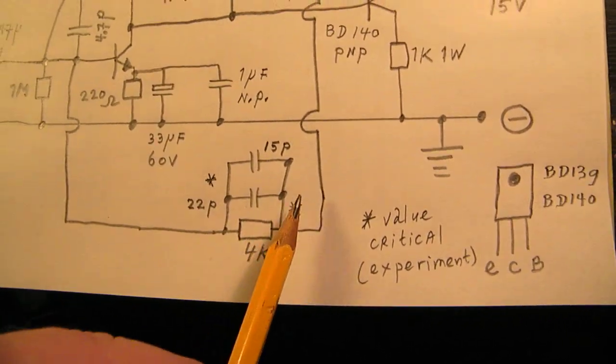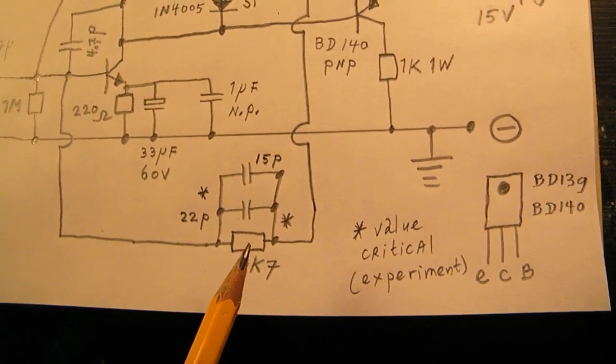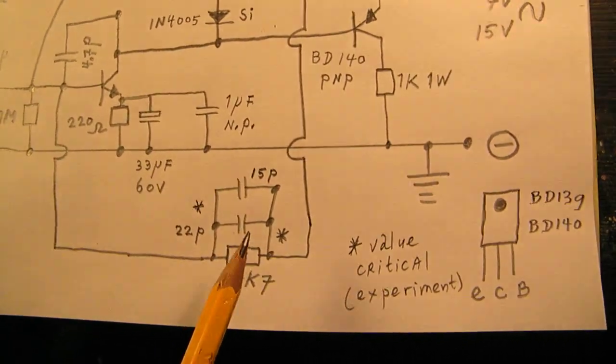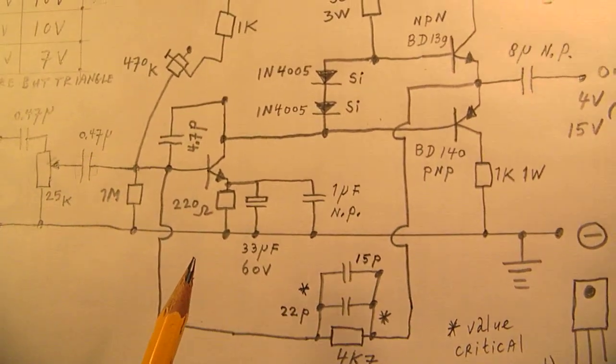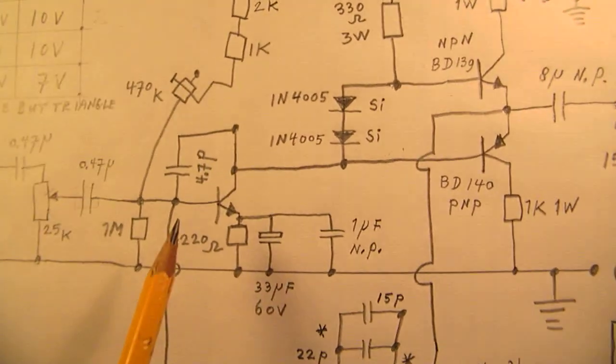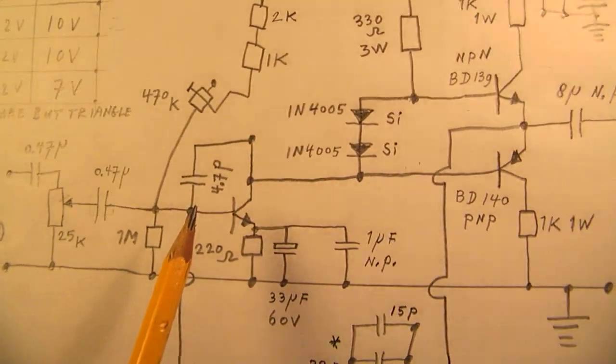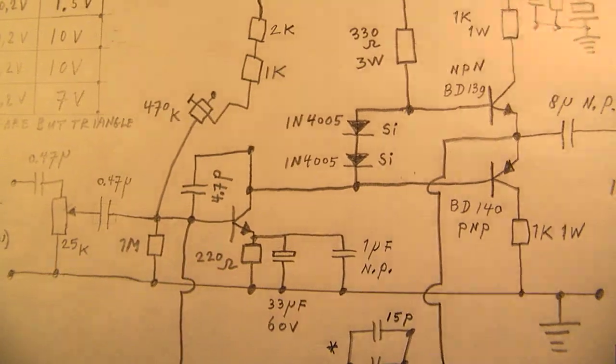These capacitors in the backcoupling unit are critical. Do some experiments. These are my values and look at the same time on the scope to get the purest waveform. And also here a small capacitor from 4.7 pF.